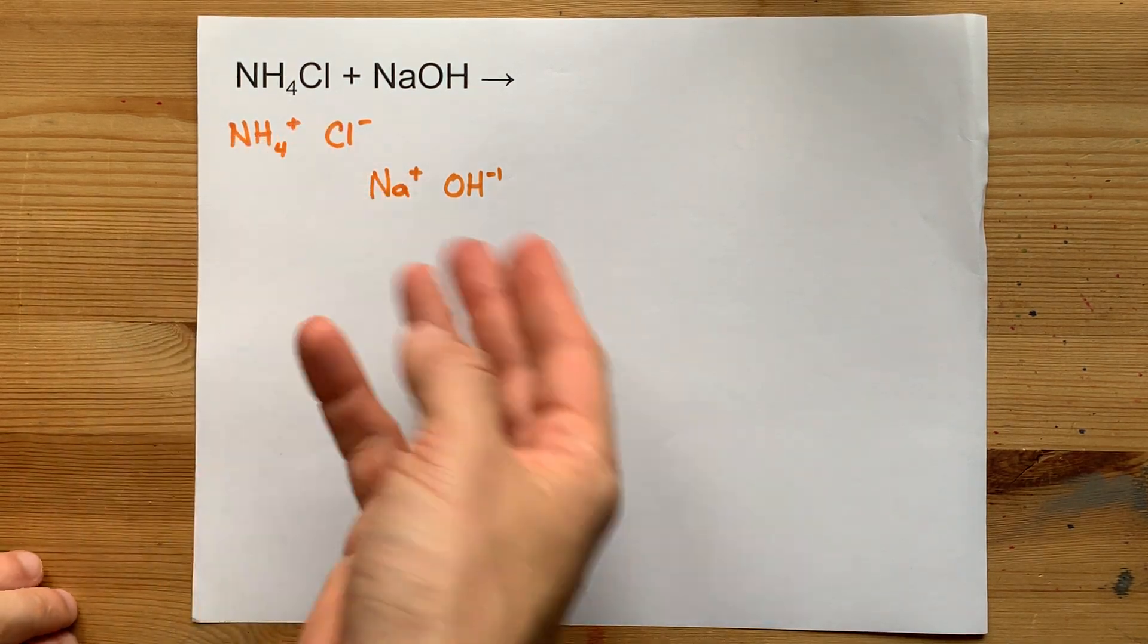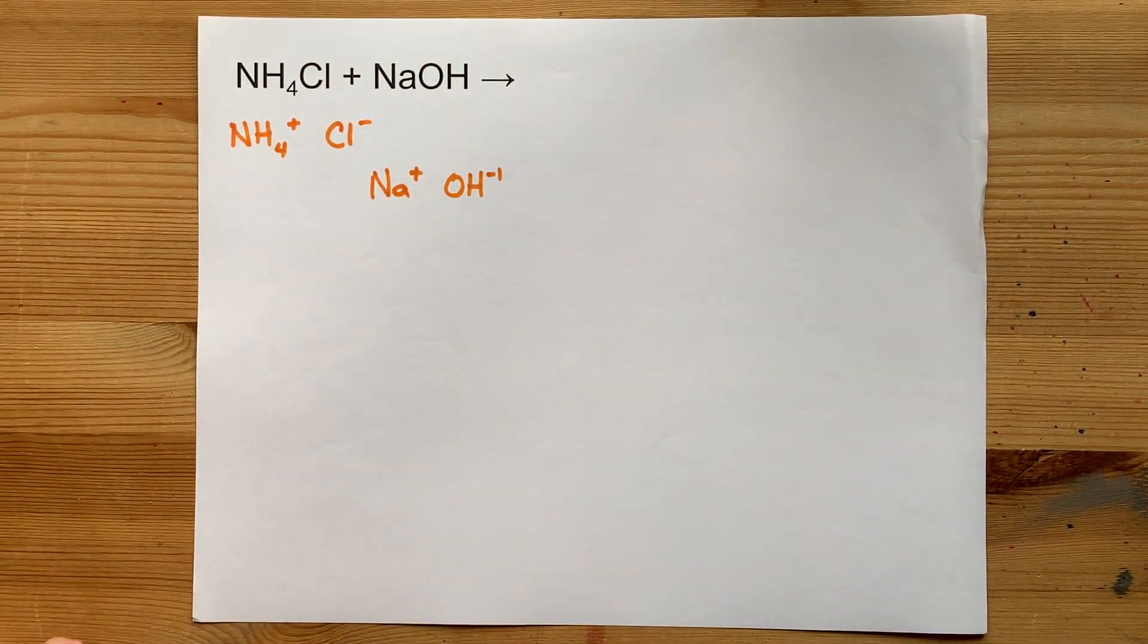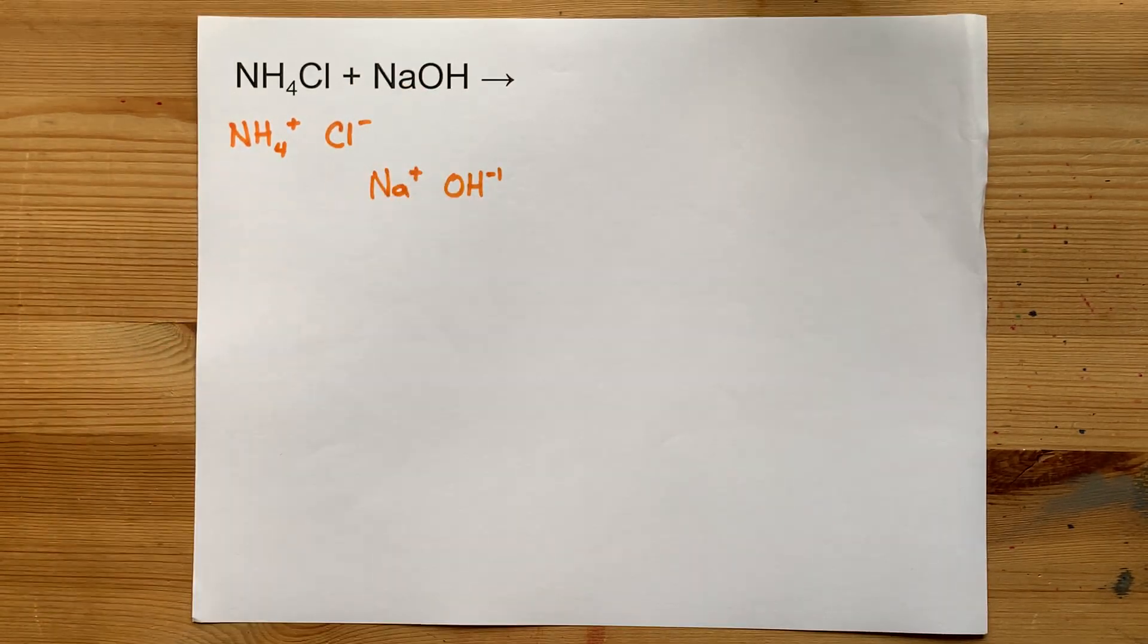Whenever you have two pairs of ions and you're asked for the product of their reaction, you're supposed to do what's called double displacement.